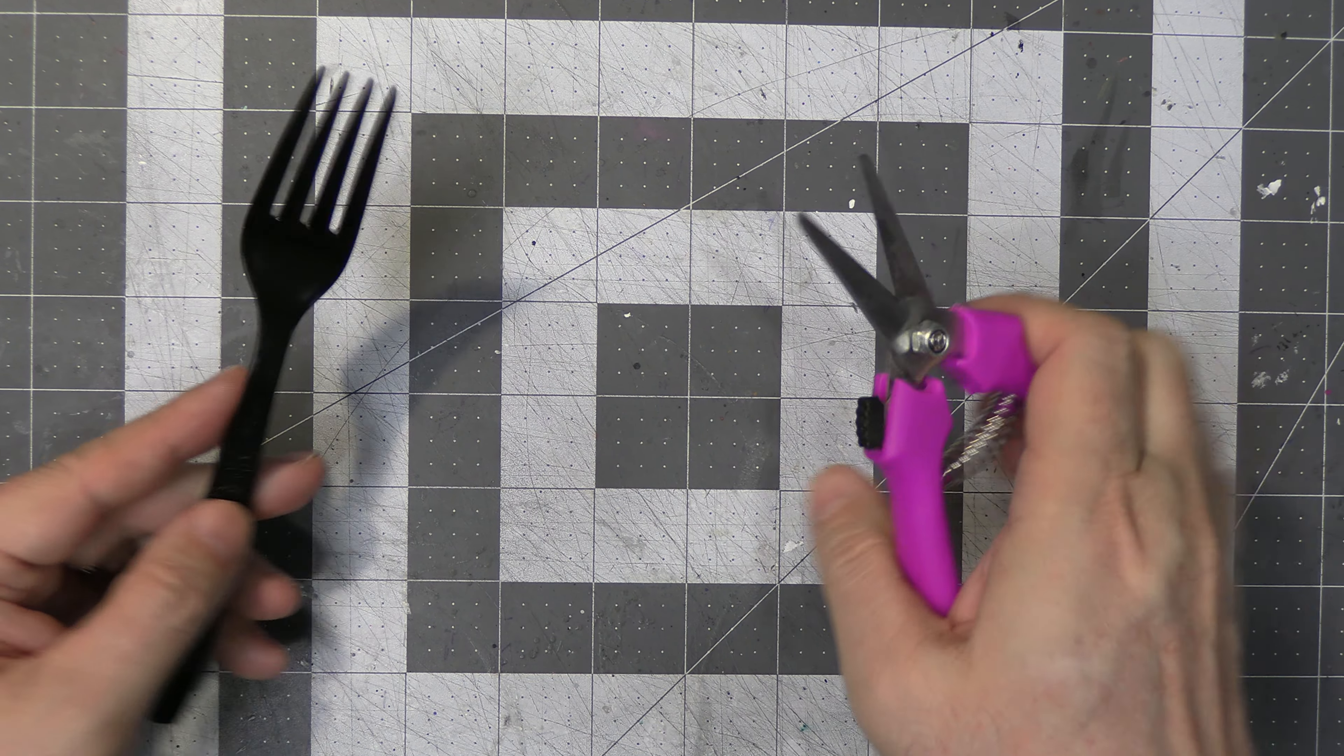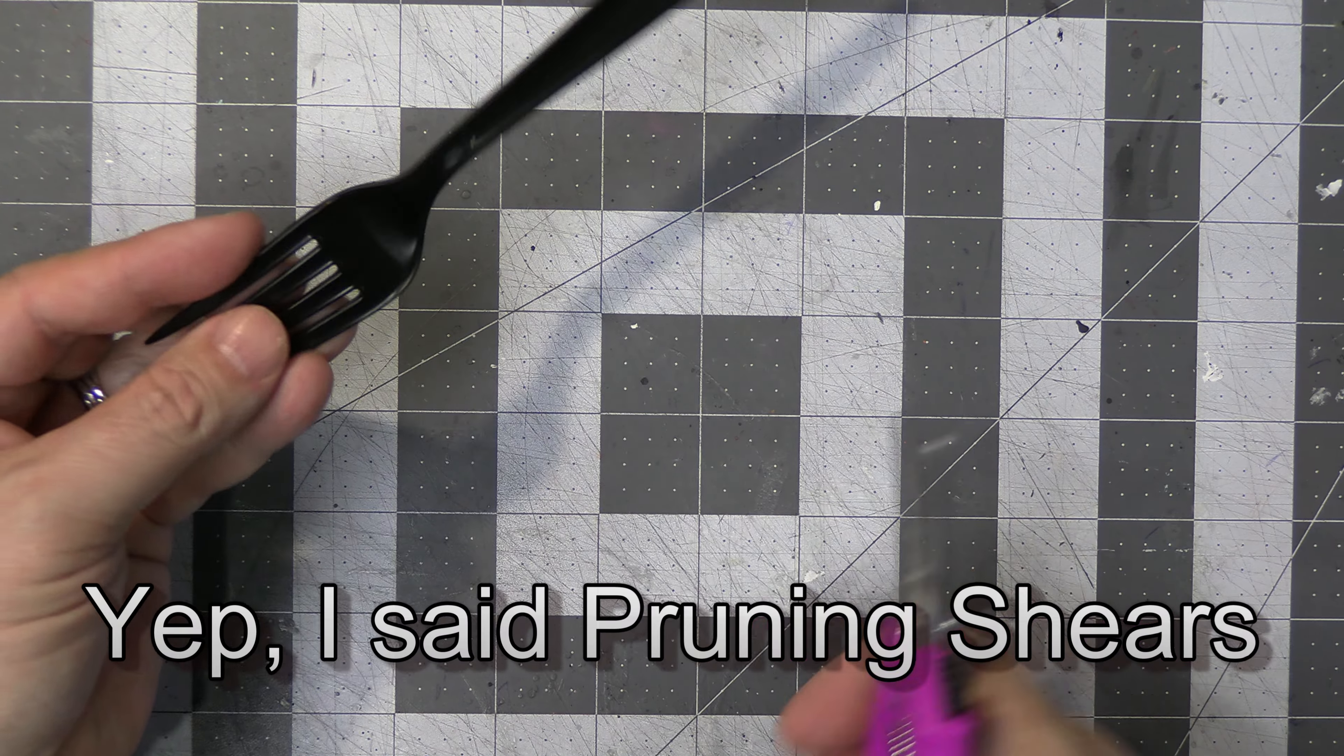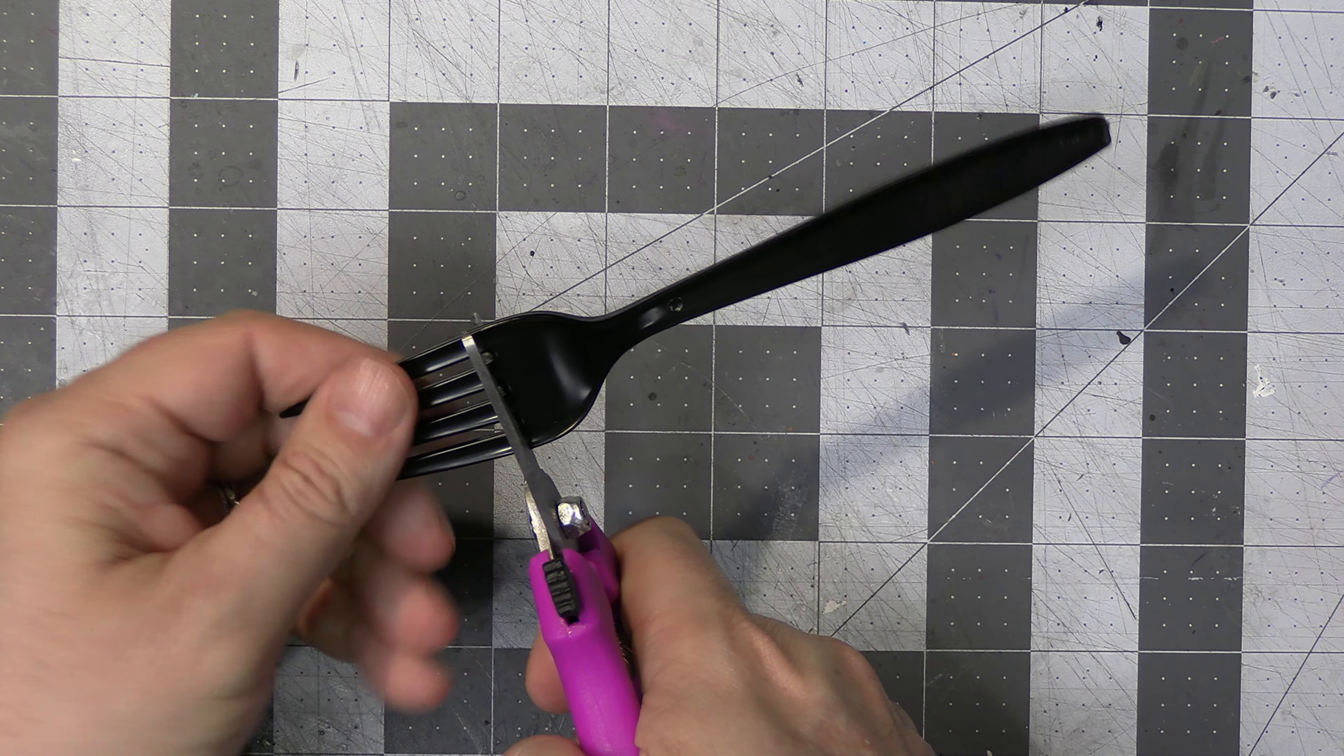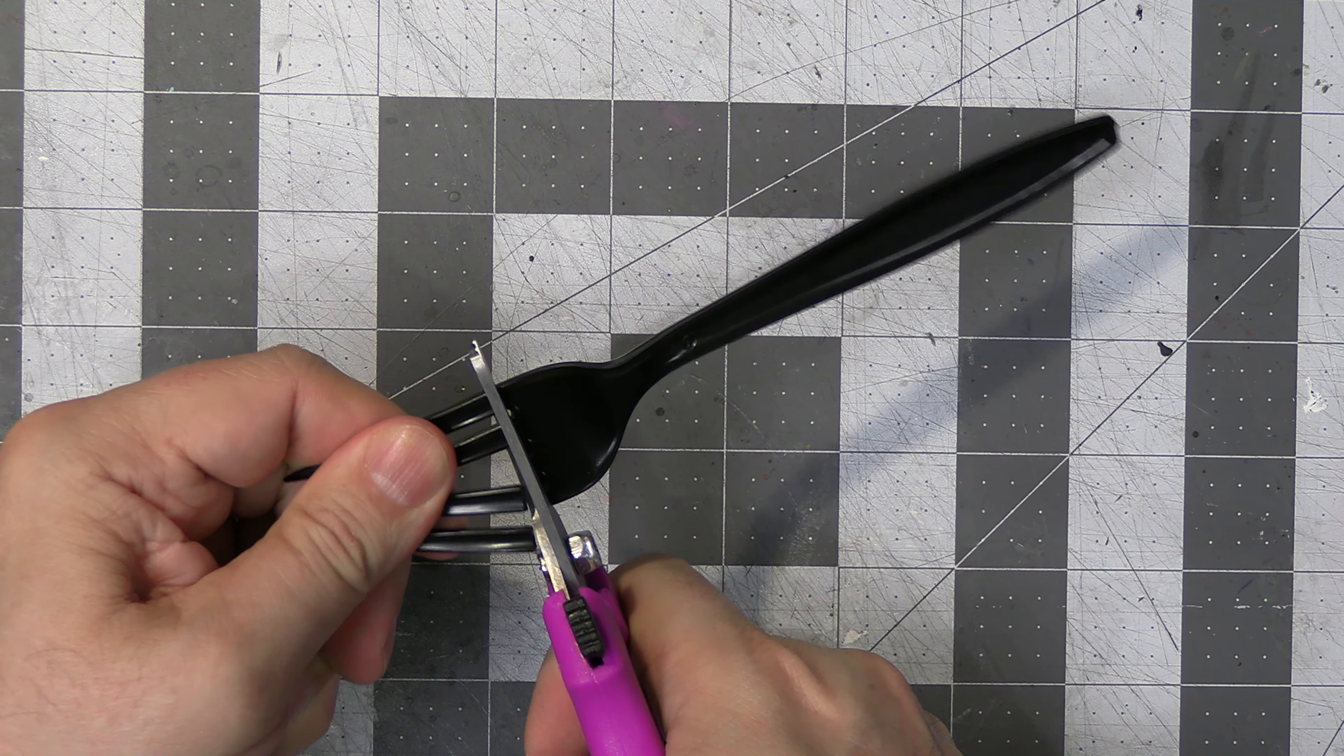So I don't destroy my regular scissors, I use these pruning shears and I just trim these tines right off and they're all set and ready for my crafts.